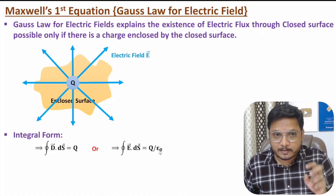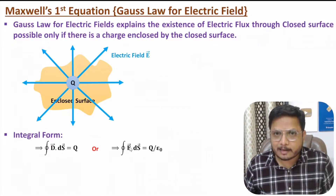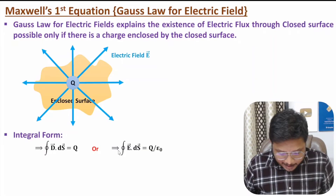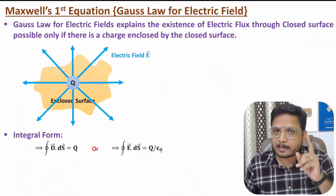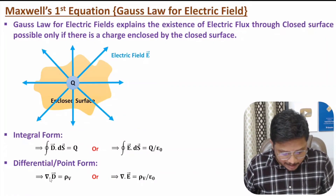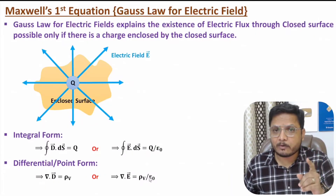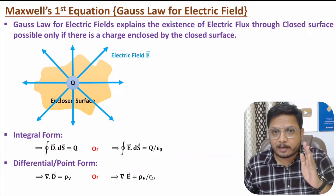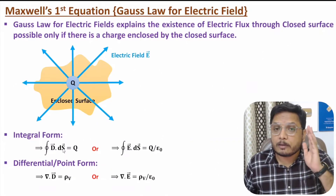These two equations are similar with no difference between them. D is electric flux density and E is electric field, and the relation between D and E is D equals epsilon times E. Based on that, we divide by epsilon. If we have a medium, then it is Q divided by epsilon-naught times epsilon-R. For free space, epsilon-R equals 1. In differential form, or point form, that is del·D equals rho-V, or equivalently del·E equals rho-V divided by epsilon-naught. That is Maxwell's first equation, based on Gauss's law for electric field, and it is for non-time varying field.